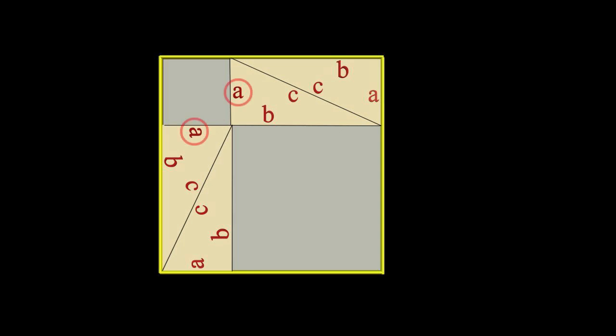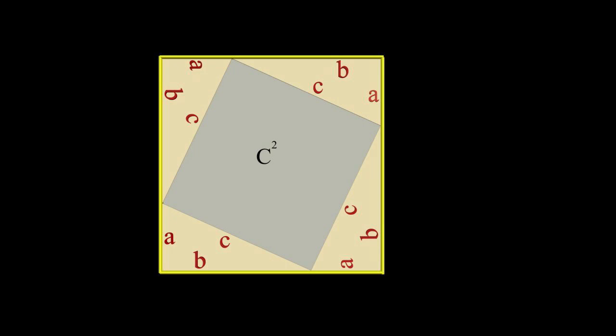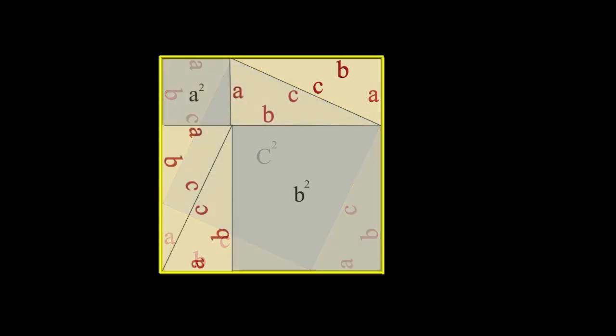The area of one of the new squares is A times A, that's A squared. And the area of the other new square is B times B, that's B squared. You can probably see where this is going. The gray area in the first construction, C squared, must be equal to the total gray area in the second construction. This area is A squared plus B squared.